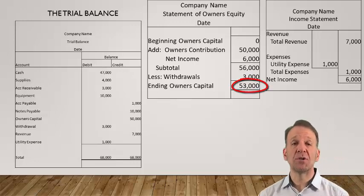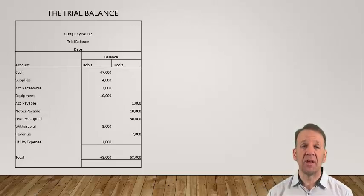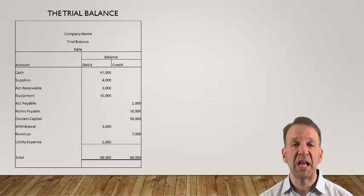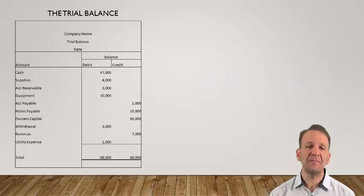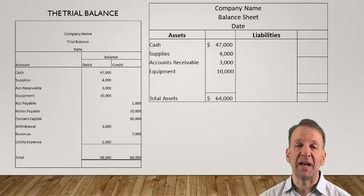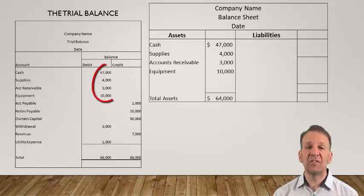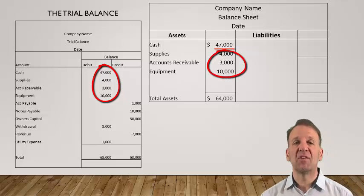We will need this ending balance in order to prepare our next financial statement, which is the balance sheet. Once again, we begin with the trial balance as we need the balances in assets and liabilities in order to complete this financial statement. The balance sheet is basically the accounting equation: assets equal liabilities plus equity. You can see the balance sheet on the right side of the screen. We will now bring in the trial balance accounts needed to prepare the balance sheet. Cash is $47,000 in the trial balance and we will move that over into our balance sheet, as well as supplies, accounts receivable, and equipment. Our total assets are $64,000.